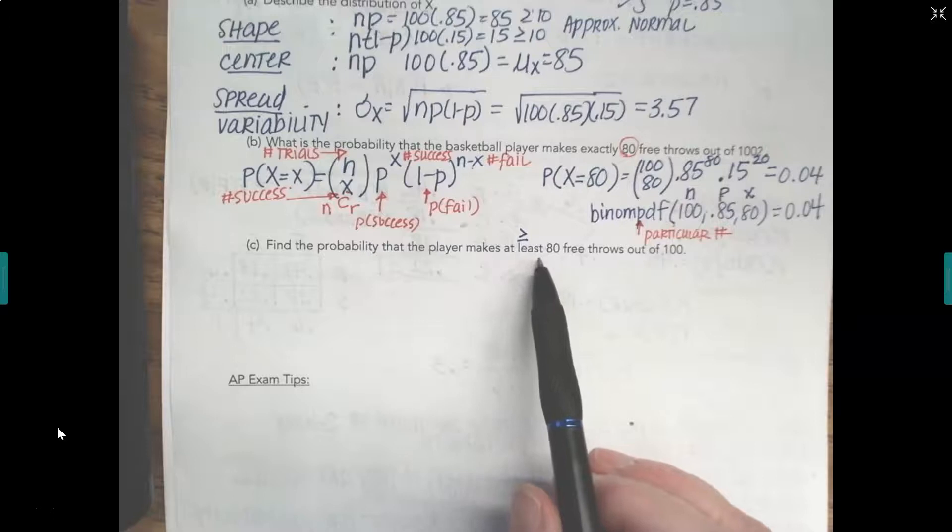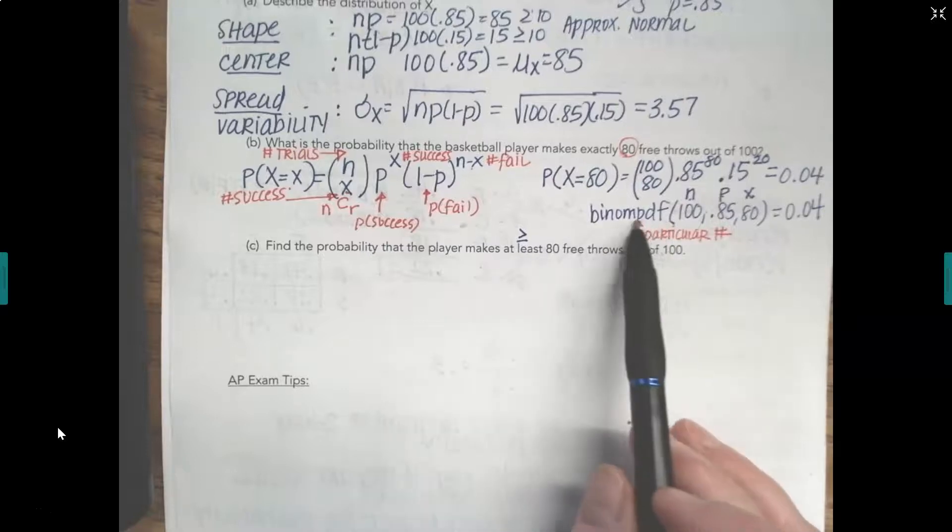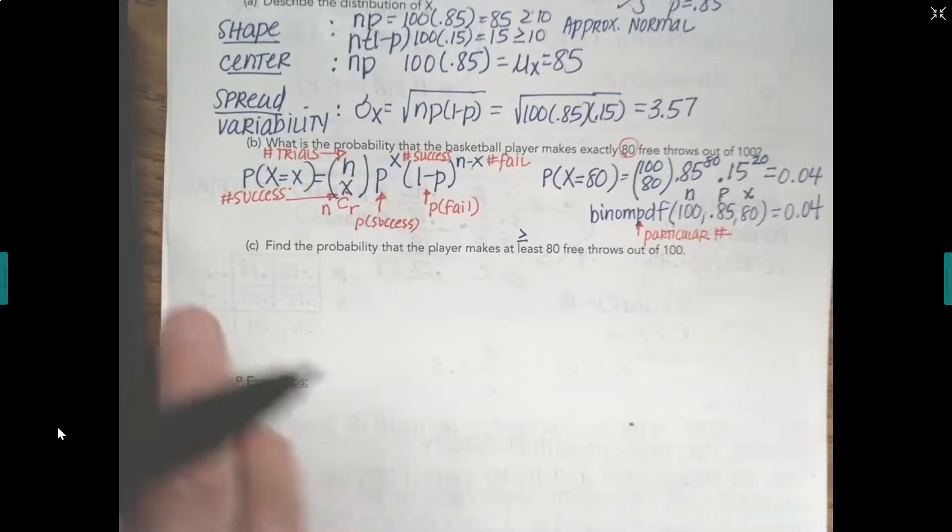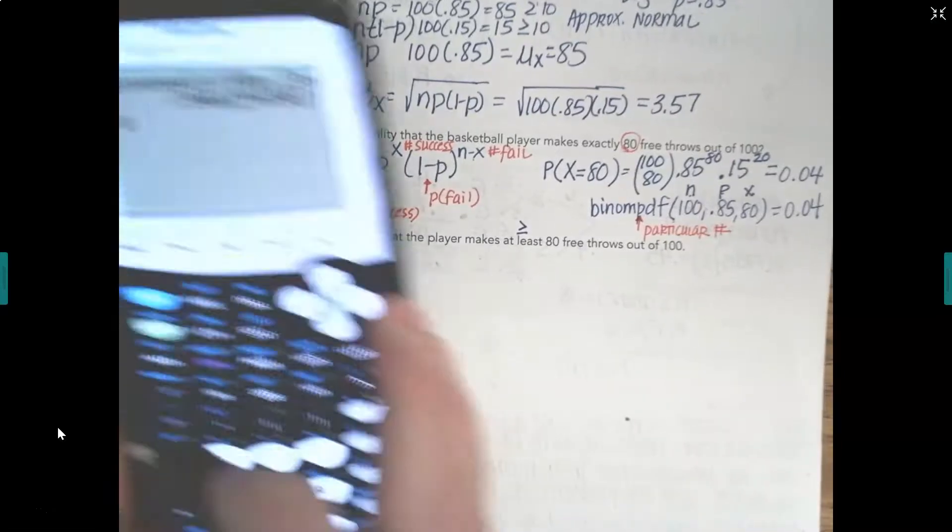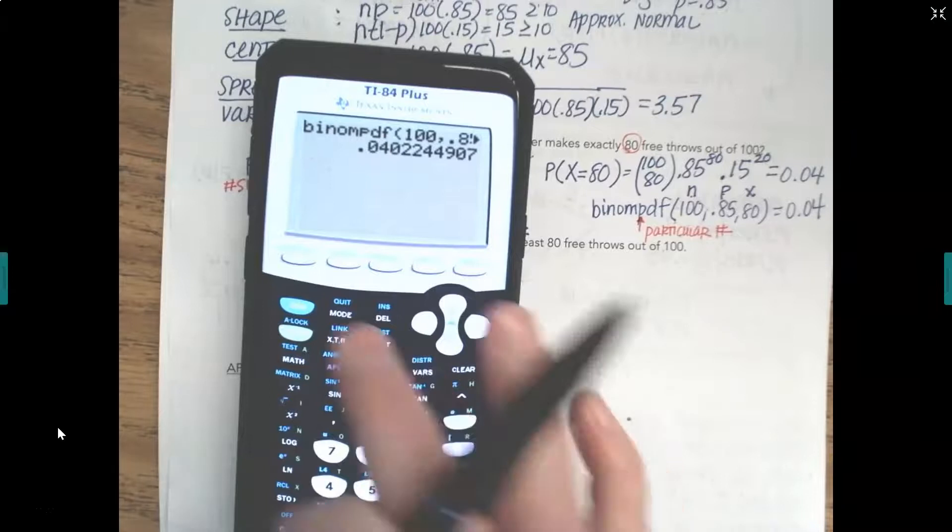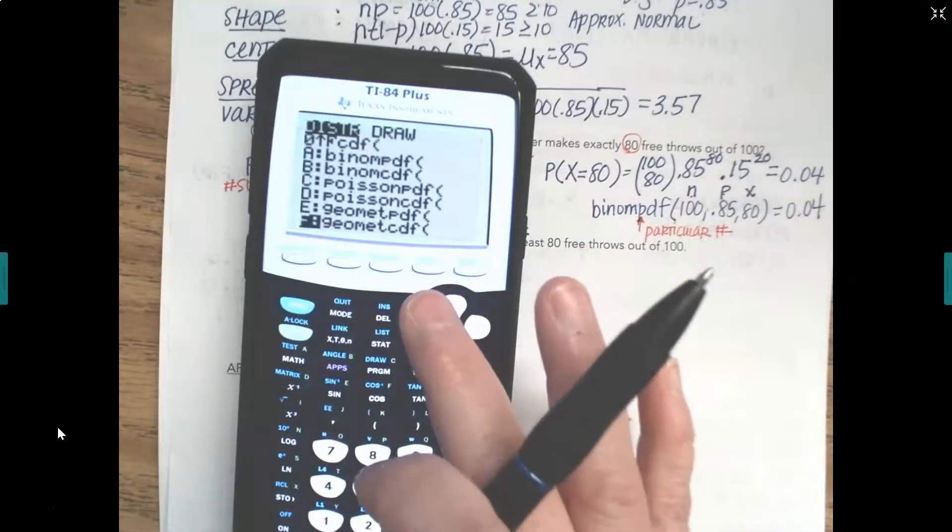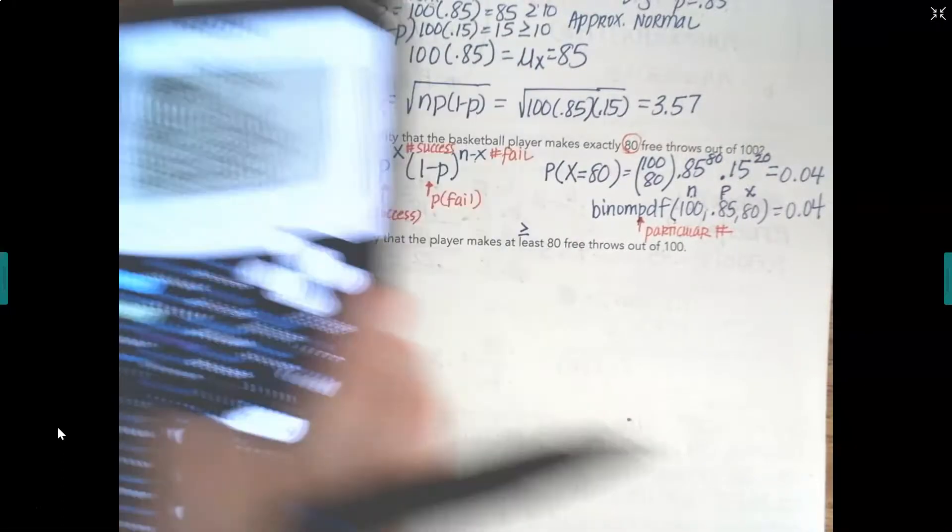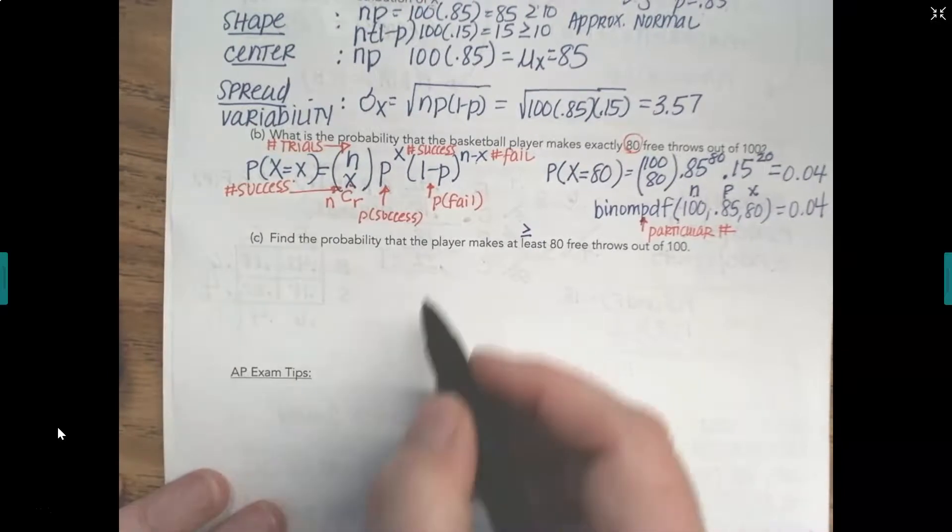If you need a range of numbers, that means you'd have to do a binomial PDF for each individual number. But remember, when we look at our calculator and we go into those distributions, just below PDF was binomial CDF. So CDF means accumulate.